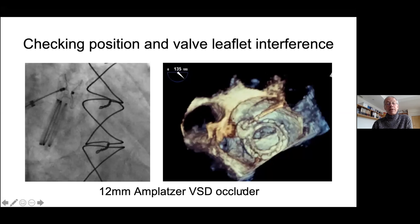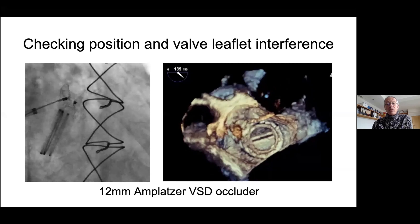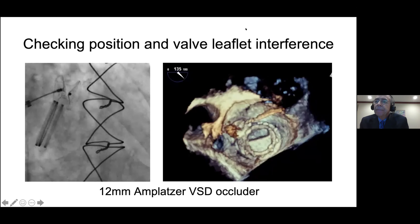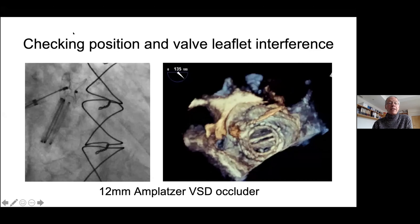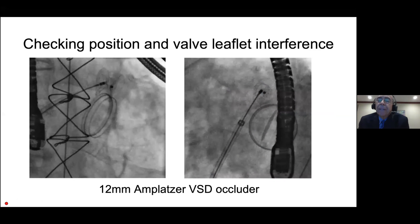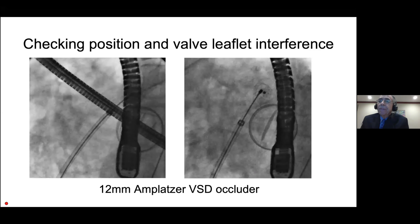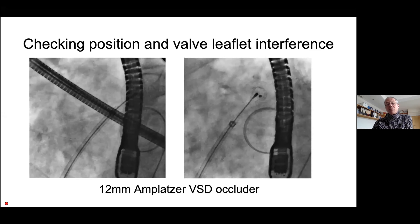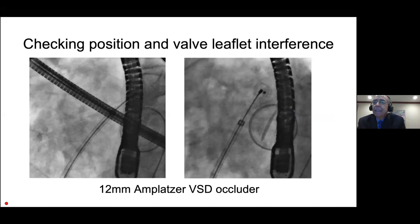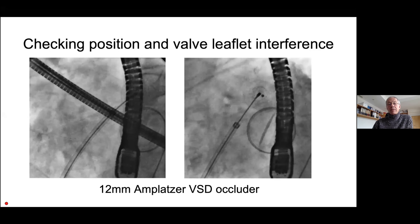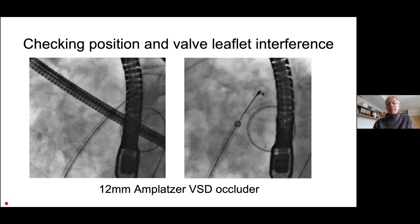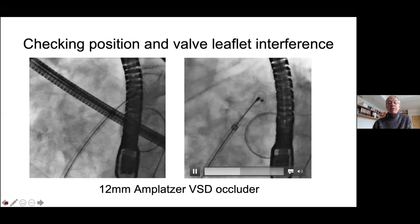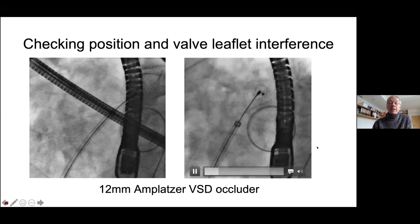Checking the position and valve leaflet interference. Everything is looking good — the leaflets are moving, and the device is in the correct position. You should check on Doppler if there is flow on the sides of the device, and see if you need to put a second device before releasing this. With VSD and PDA occluders you always see flow through the device — the question is the sides of the device. In mechanical valves it's very important to make sure the leaflets are moving freely, because you may interfere with the leaflets. I do this under fluoroscopy and echo. The leaflets are clearly moving freely.